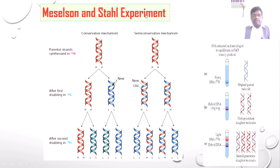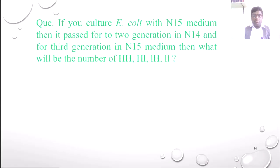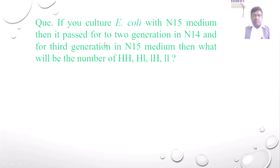By the Meselson and Stahl experiment, they proved DNA replication follows the semi-conservative mechanism. This type of question may be asked in the CSIR NET C section for four marks.